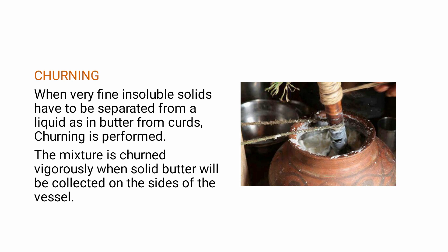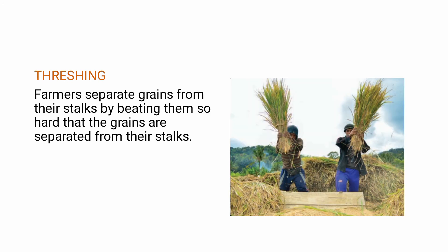Then threshing. Threshing is a process of separating grain parts by beating them on the floor, wall, or some hard surface. The farmer must separate grains from the stalks by beating them hard on a wooden plank or a big rock to separate the grains.